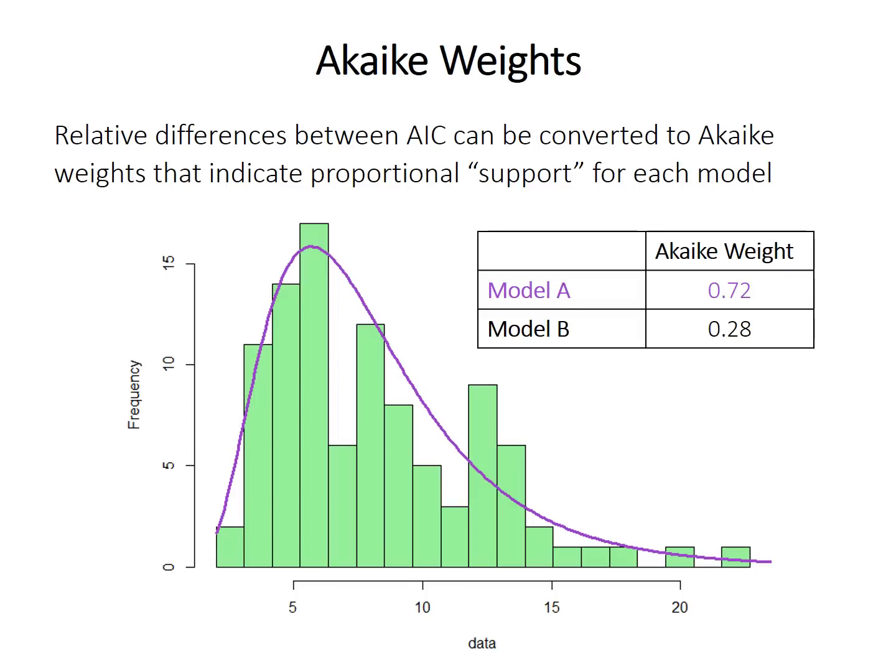So relative differences between the AIC values for a variety of different models can be used to determine the best model of those candidates that you're looking at. But you can also convert the AIC values into something called Akaike weights. And they basically indicate the proportional support for each model. They'll sum up to 1 or to 100%. So in the example that I introduced at the beginning is sort of our test case here. Model A, which is the log normal incidentally, is the best model of the two. It has an Akaike weight of 0.72. So notice that those two models sum up to 1. So 1 gets 72% of the support, as we'll call it, and 1 gets 28%. So this gives relatively strong support for model A over model B.